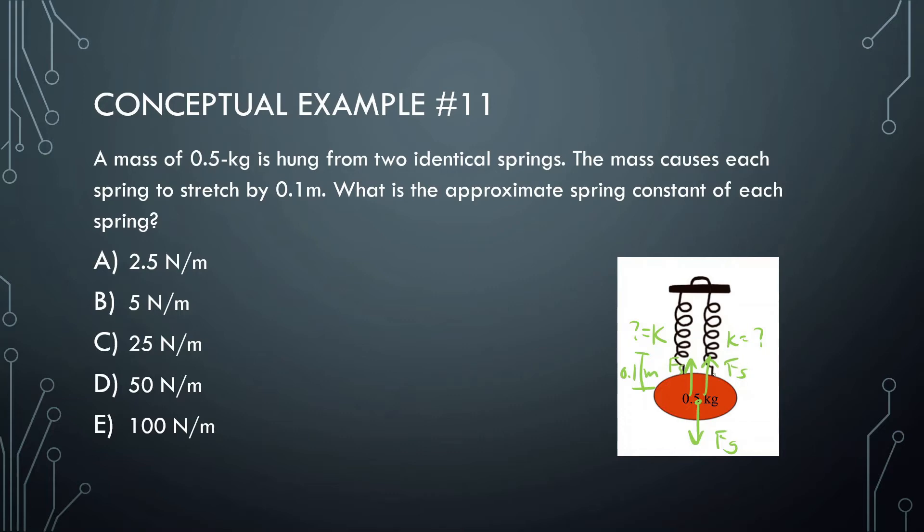And I'm just going to find what the total force of the spring is. So I'm going to say force of the spring total is equal to the force of gravity. So this is going to be kx is equal to mg. k is unknown. That's what we're looking for. x, it gets stretched 0.1 meters. The mass is 0.5 and then gravity is 10. Do a little bit of algebra and then we find that k is 5 divided by 0.1, which is 50 newtons per meter.